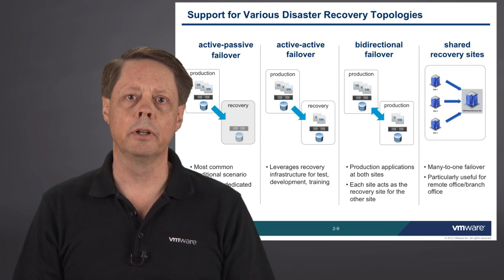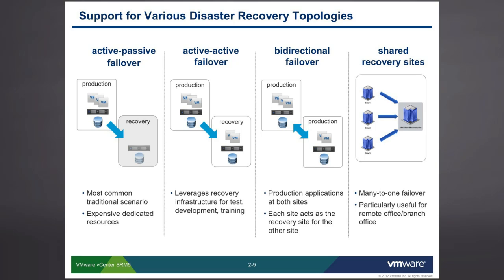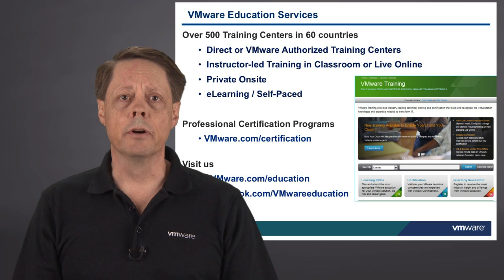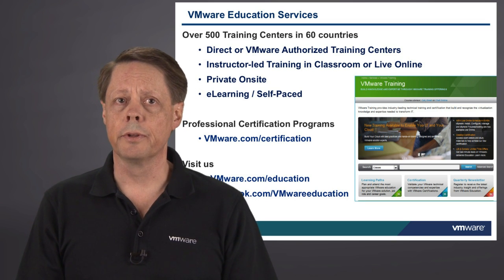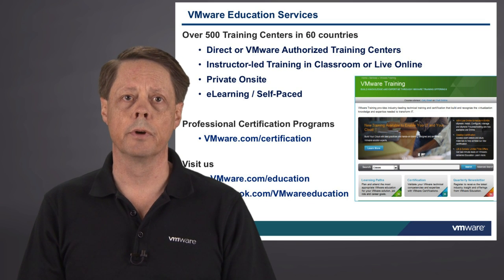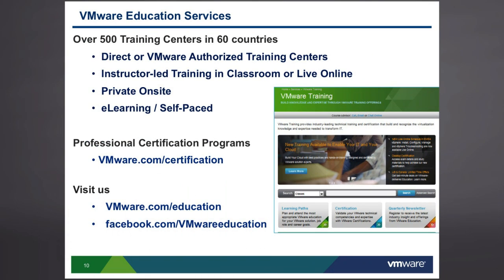Active-active failover provides full bi-directional failover where each site acts as a recovery for the other, with full production running on both sites. Active-active and bi-directional are very similar — it really comes down to whether we shut off some workloads to make room for incoming ones. Finally, the concept of a shared recovery site can be useful for branch-to-central-office deployments, as well as for service providers looking to offer SRM failover sites for customers. That pretty much covers the overview of SRM 5 features. For more information, visit vmware.com/education or vmware.com/certification.